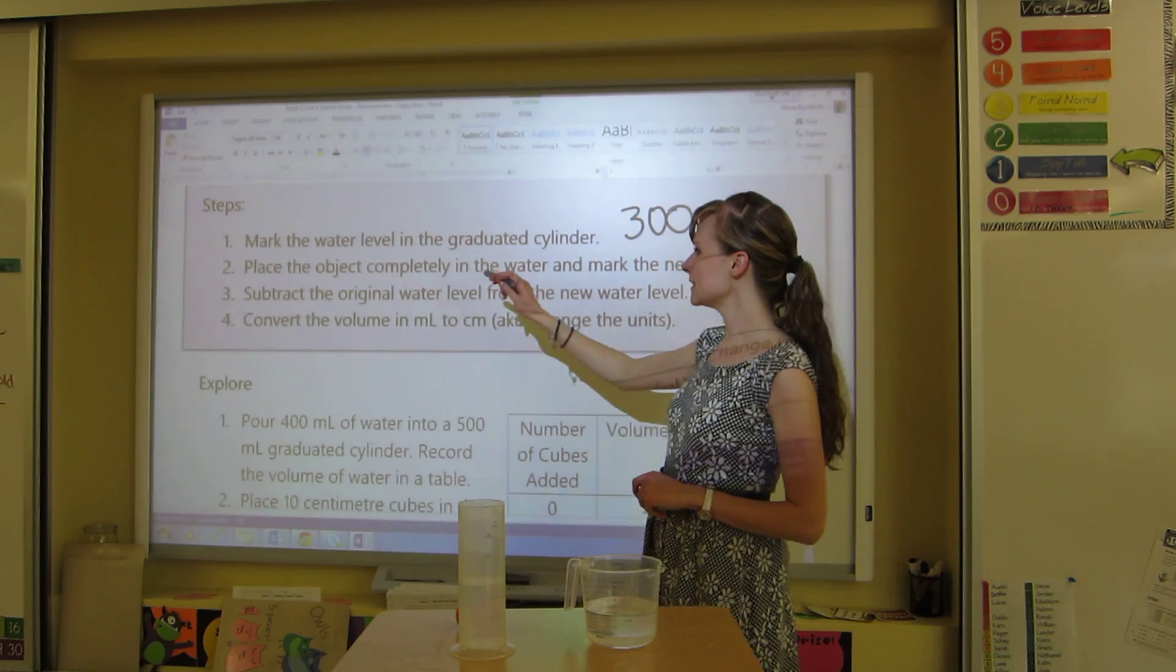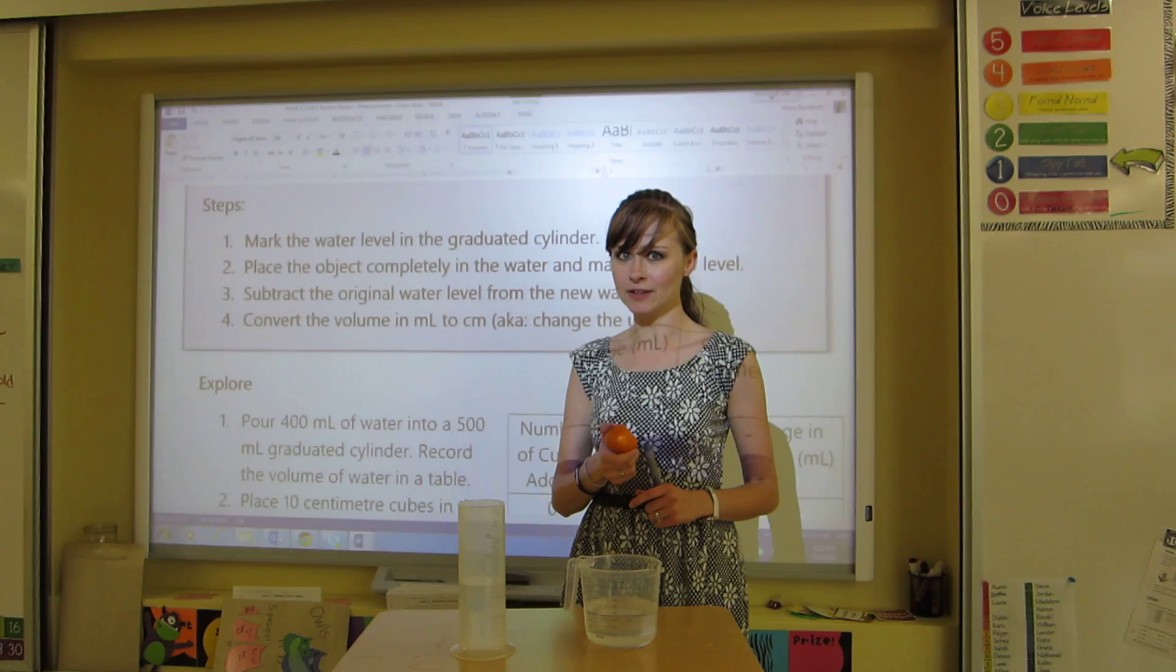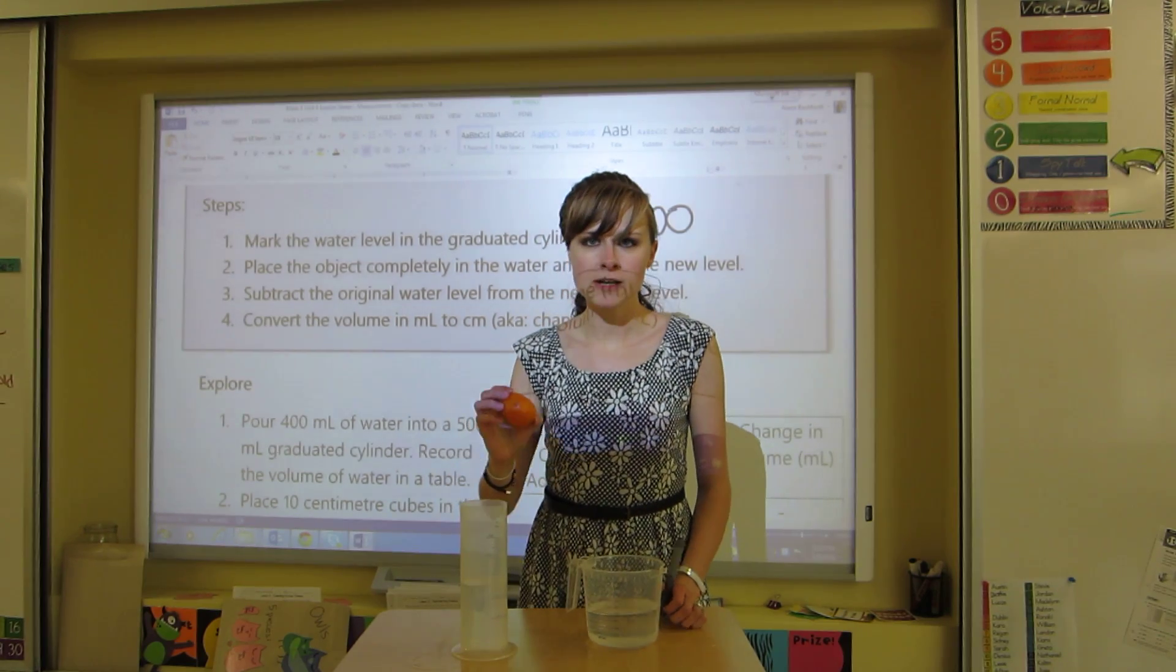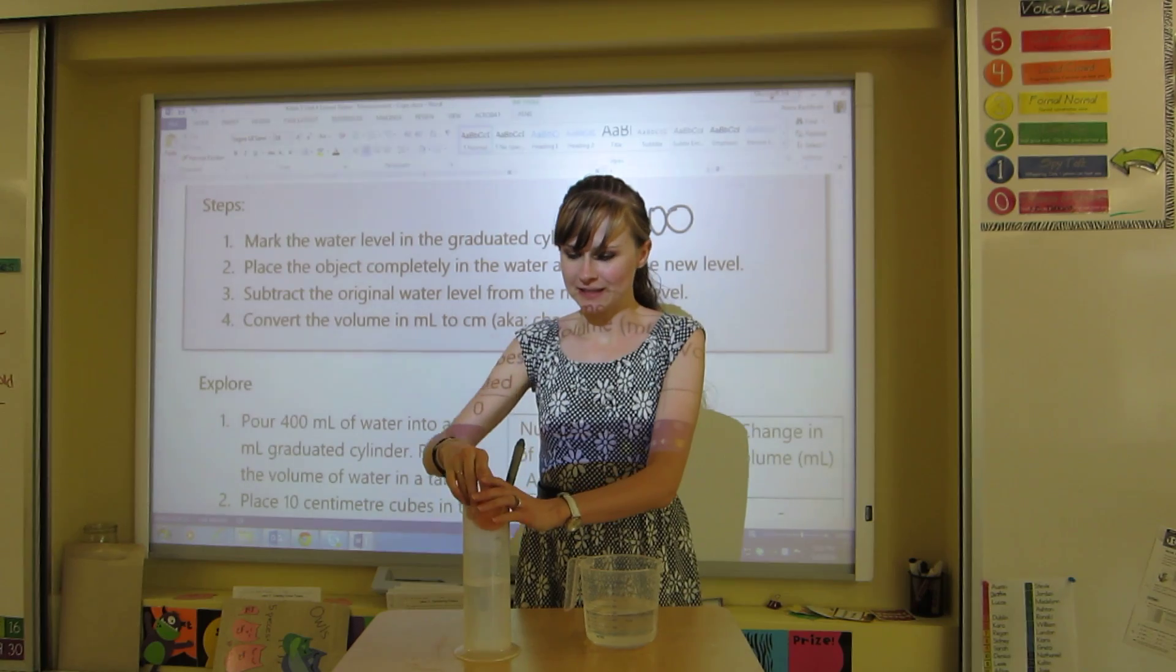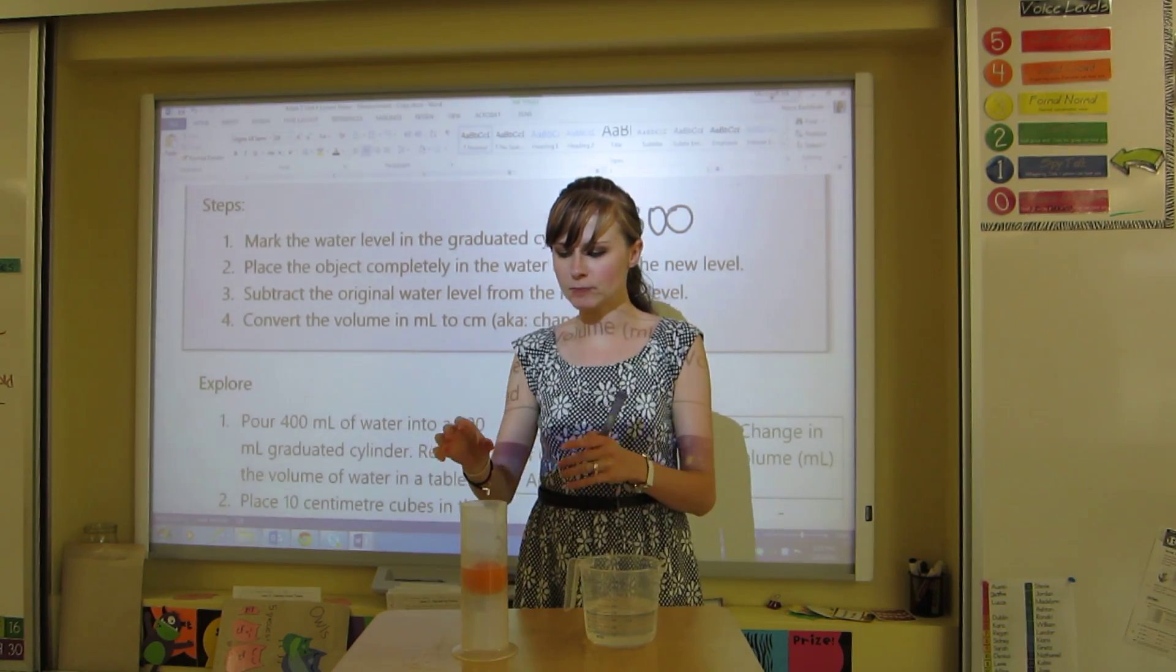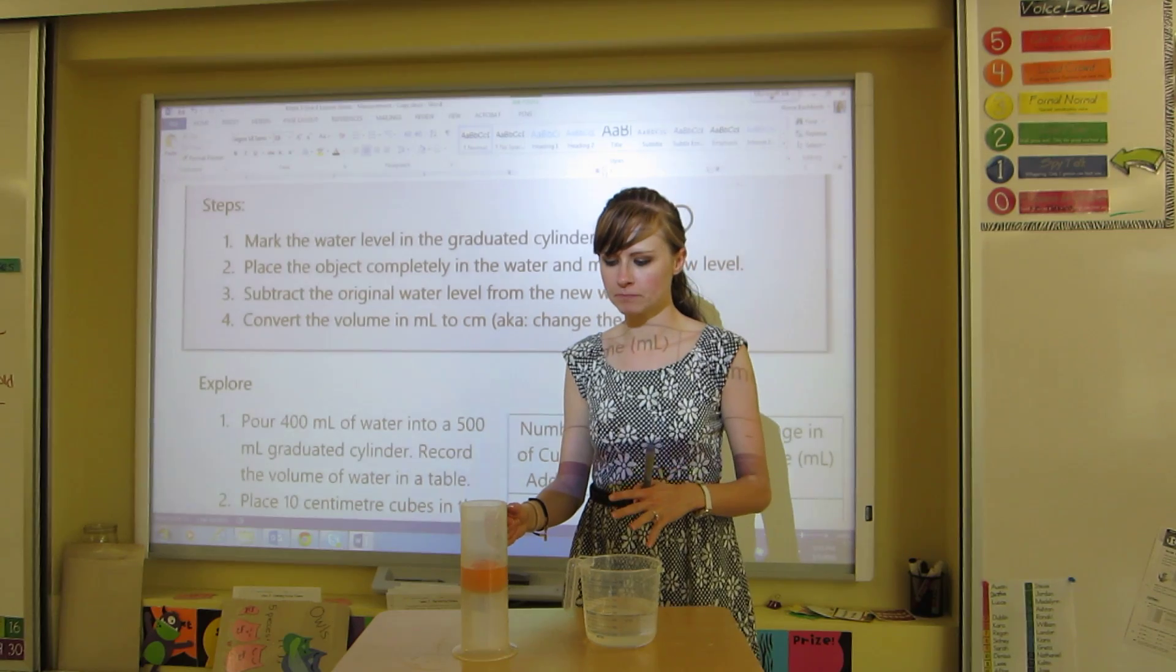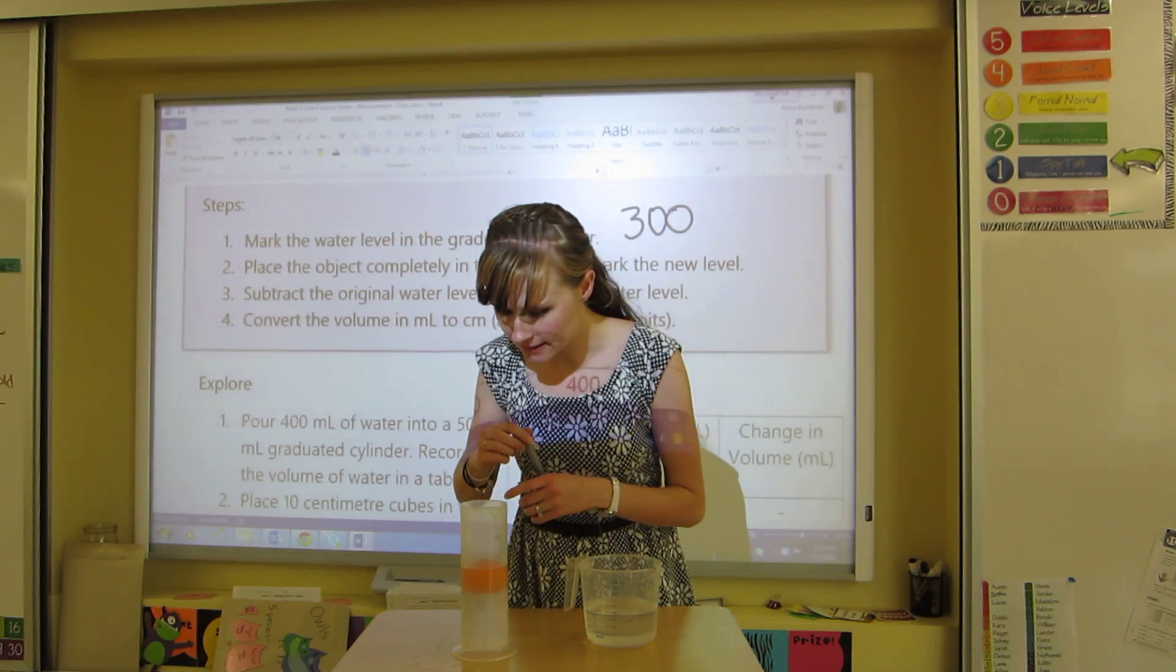Now, place the object completely in the water and mark the new level. I've got an orange, and we're going to find the volume of this orange. So I'm going to place this orange, and I'm placing this because I know that it's waterproof. Don't put anything paper or cardboard in. And it also fits. So I'm going to place it in there, trying not to splash the water on. It floats. Try not to splash the water up because that'll affect my measurements if water comes out.